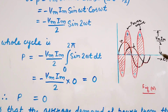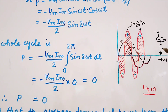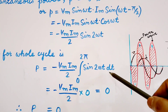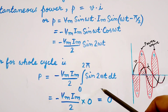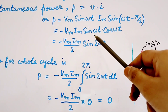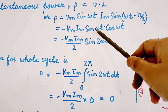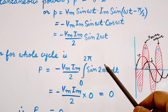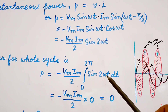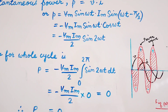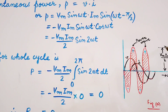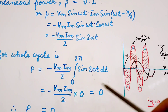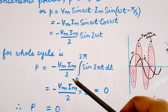The maximum value of the instantaneous power is VmIm/2. From the expression we see that the power contains sin(2ωt), whereas the voltage and current expressions contain sin(ωt). So the power wave is a sine wave with double the frequency of the current and voltage wave, and the amplitude of the power wave is VmIm/2.